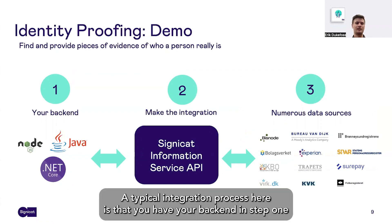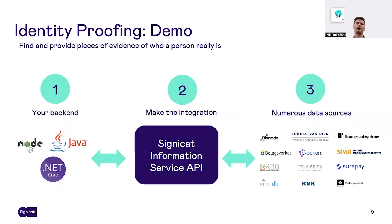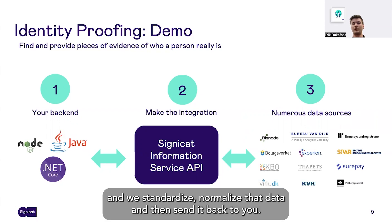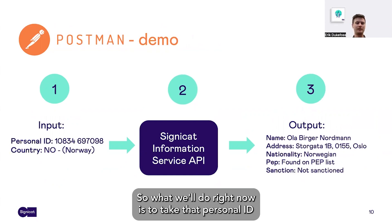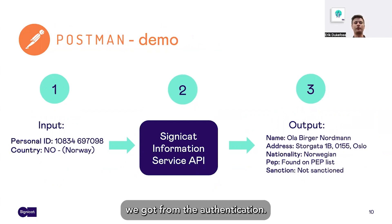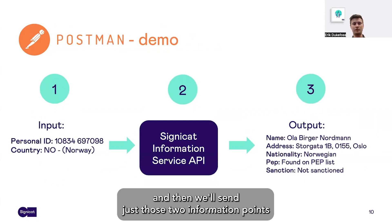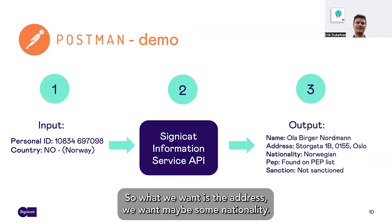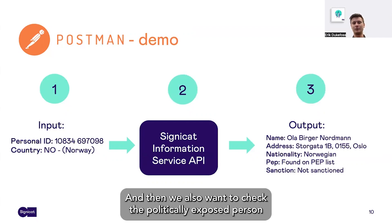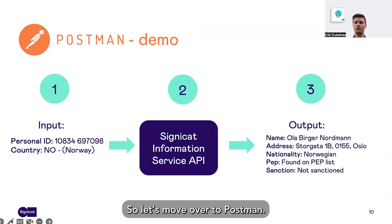A typical integration process here is that you have your backend in step one, and you connect that to Signicat's Information Service API. That API is connected to numerous data sources, and we standardize and normalize that data and then send it back to you. We'll take a look at this in a Postman demo. What we'll do right now is take the personal ID we got from the authentication — we know that it's a Norwegian person — and then send just those two information points into the Signicat Information Service API and take a look at the output. So what we want is the address, some nationality, and also to check the politically exposed person and sanction list.